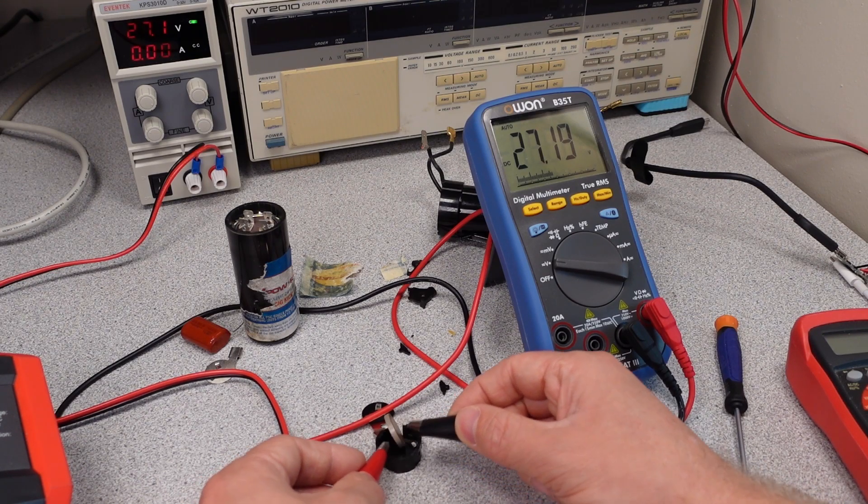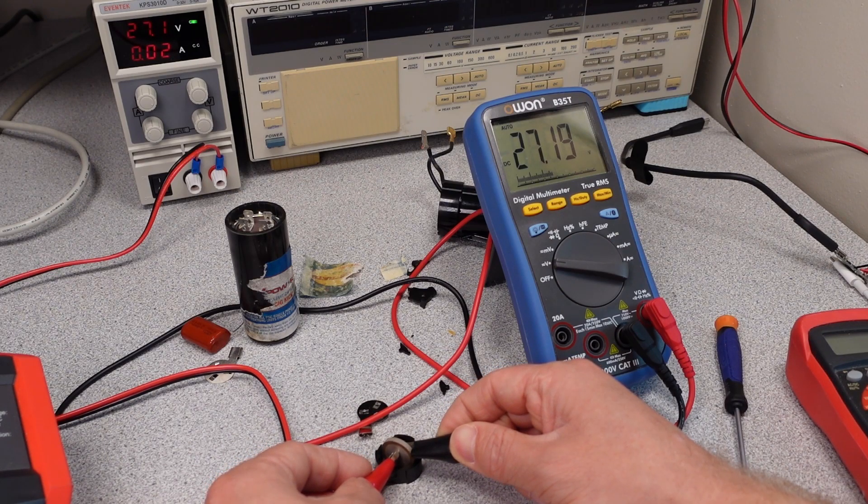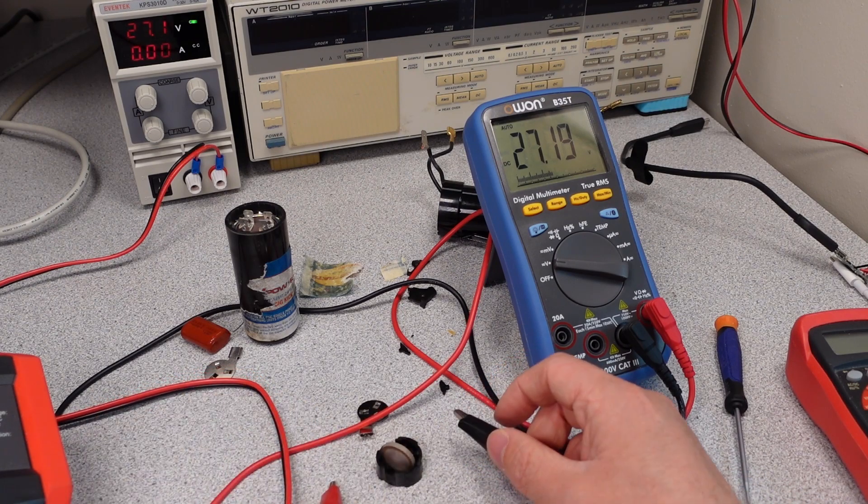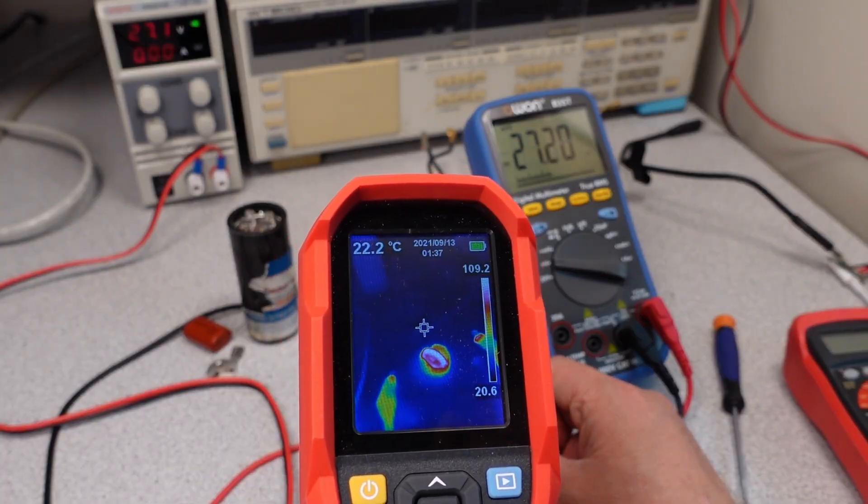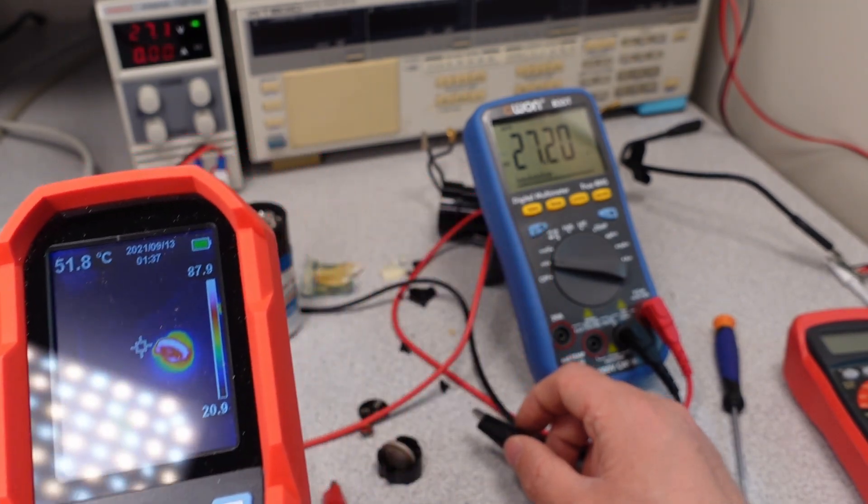So if we leave this connected all the time, it's going to draw almost no current at all, because it just has to maintain that high temperature, which you can do with just a few milliamps. Let me take a look at it again with the thermal camera. We can see it's back up over 100 degrees C. So that's the basic principle of operation for this thing. It's a thermal relay.